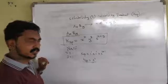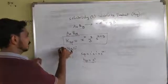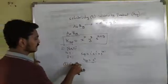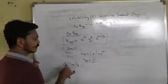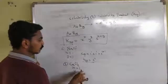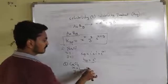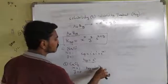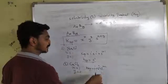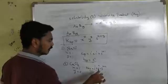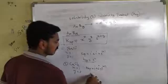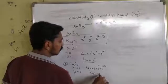Example 2: Calcium chloride, CaCl₂. Here x = 1 (calcium) and y = 2 (chlorine). Applying the formula: Ksp = 1^1 × 2^2 × S^(1+2) = 1 × 4 × S³ = 4S³. So for CaCl₂, Ksp equals 4S cubed.